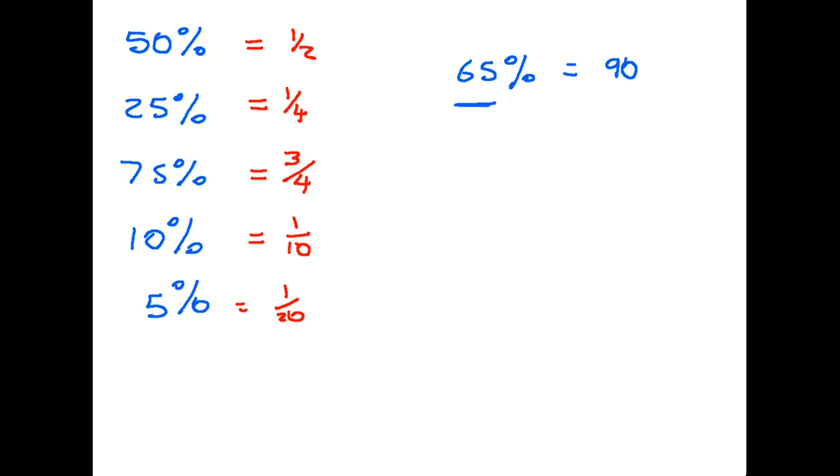65 percent can be broken down by using some of these percentages on the left hand side. So for instance, we know that 50 percent is a half, so if we work out a half of 90 - divide it by 2 - we end up with 45.